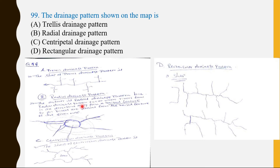The radial drainage pattern occurs where a river flows in all directions away from a central high feature. This is the structure of the radial drainage pattern. This is a rare characteristic of the oval shape.